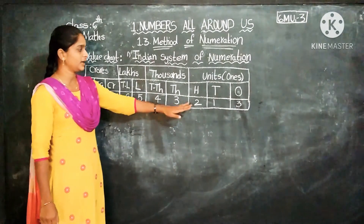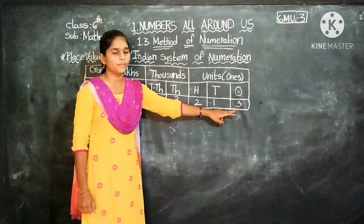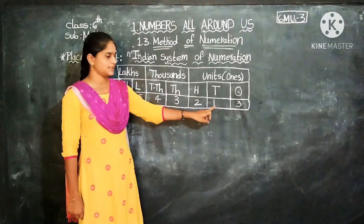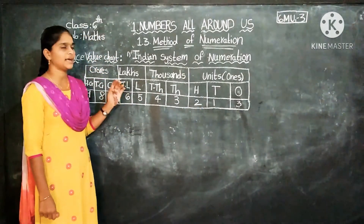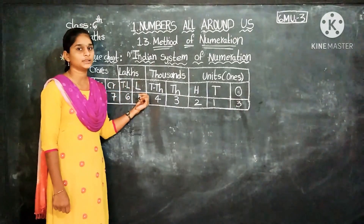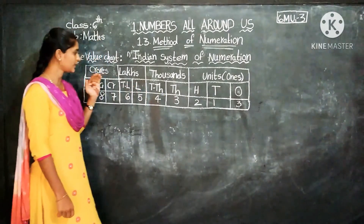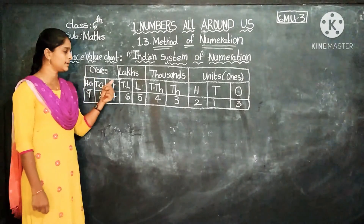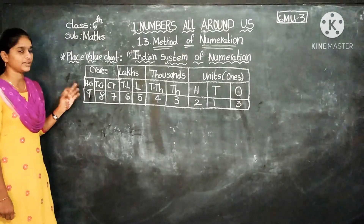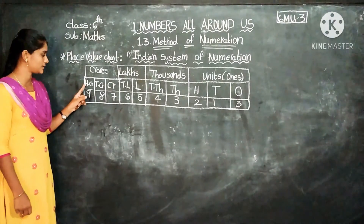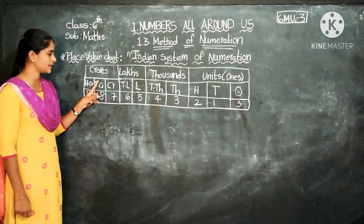Units has Ones, Tens, and Hundreds places. T means Tens, H means Hundreds. Thousands period has 2 places: Ten Thousands and Thousands. Lakhs period has 2 places: Ten Lakhs and Lakhs. Crores has 3 places: Hundred Crores, Ten Crores, and Crores.